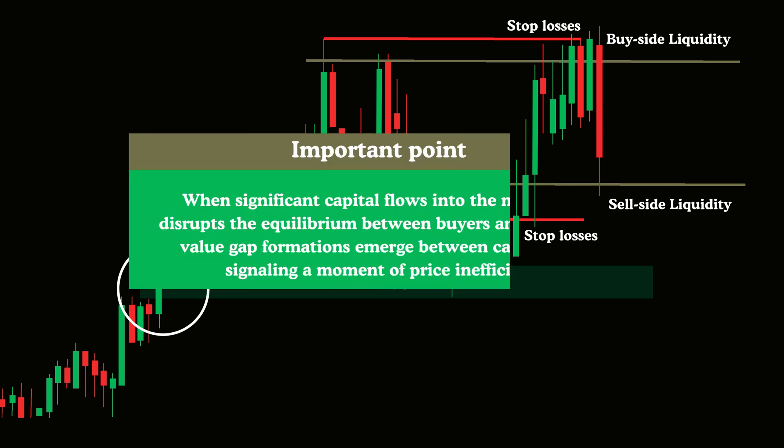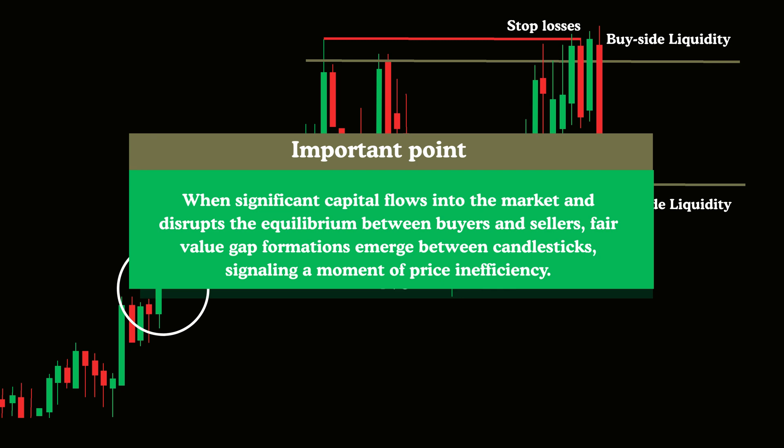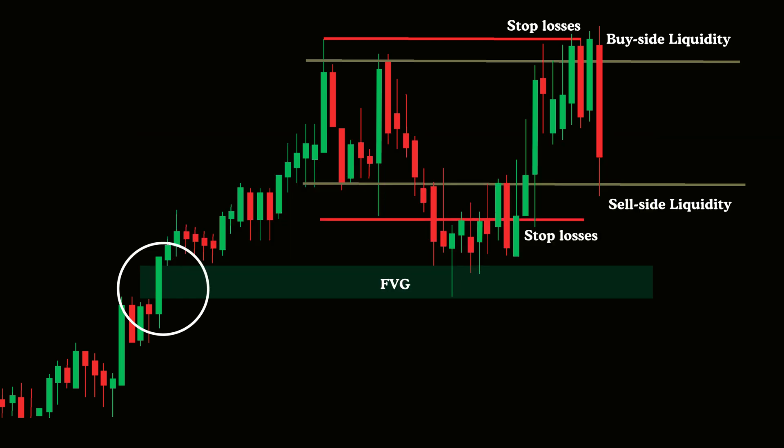This price gap between candles is what's known as a fair value gap. When significant capital flows into the market and disrupts the equilibrium between buyers and sellers, fair value gap formations emerge between candlesticks, signaling a moment of price inefficiency. When such zones appear on the chart, price tends to rally toward these predefined levels as the market needs to revisit that zone to correct the inefficiency present there.